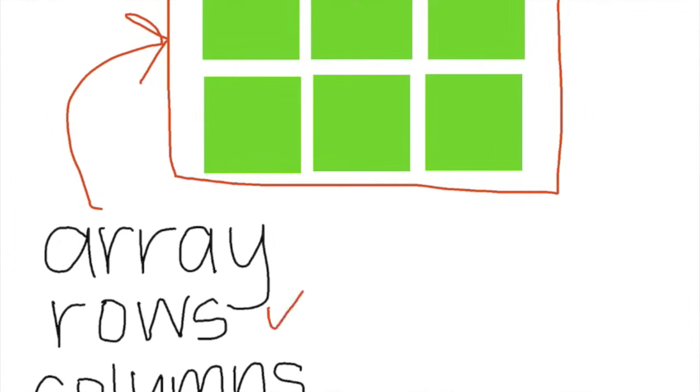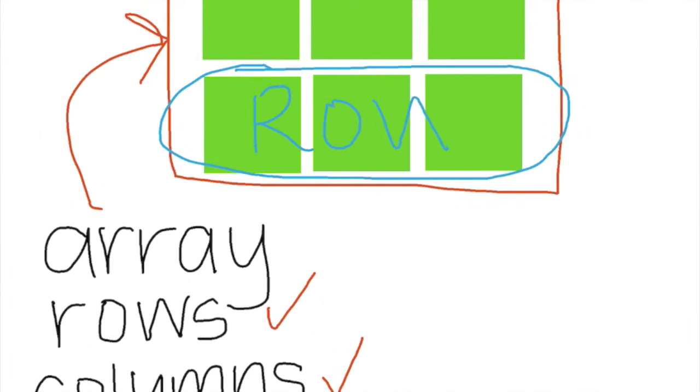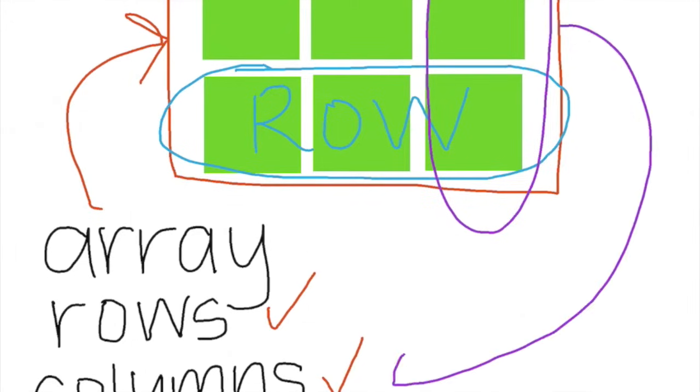Okay, so just so you guys know, this entire thing right here is called an array. An array shows us a combination of rows and columns. This right here is our row. And this right here is a column.